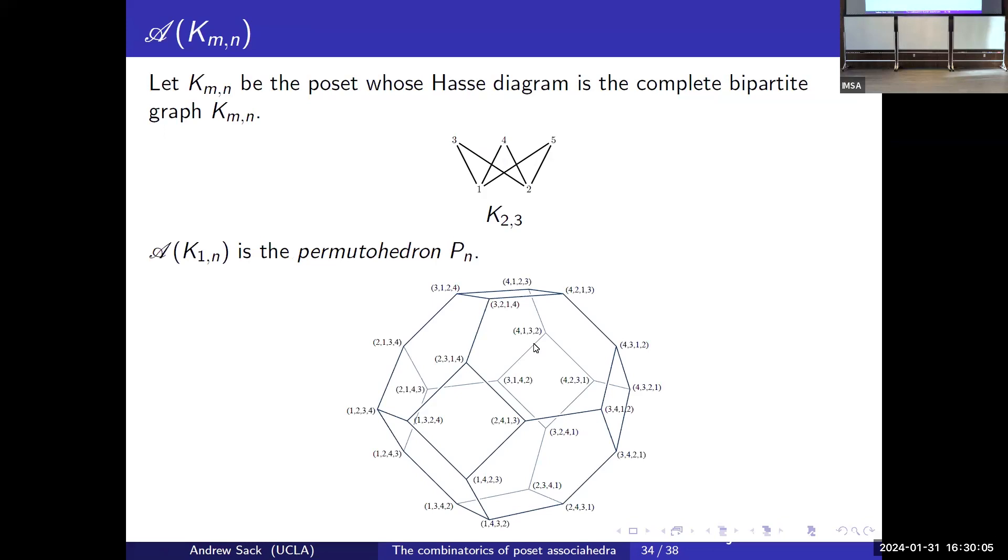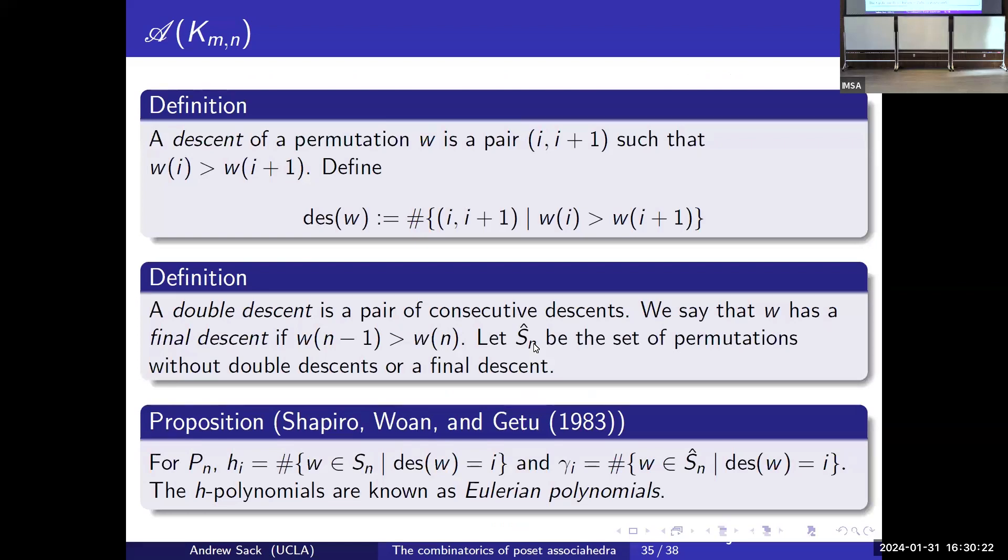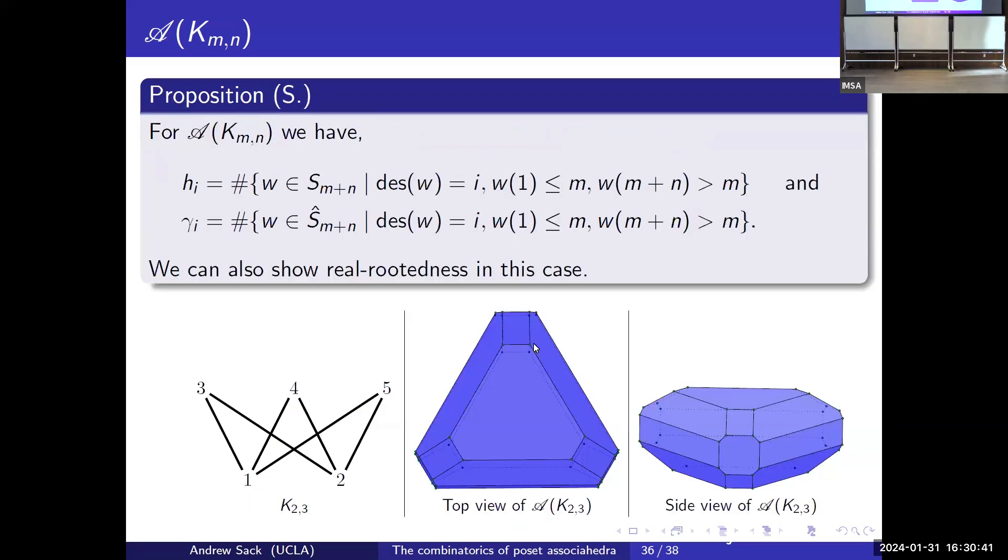This is going to be real-rooted, and this implies then gamma positivity. In this case we know, and what makes this case interesting is that this is a class of non-flag poset associahedra that are gamma positive. We can also talk about the complete bipartite graph. When we have the complete bipartite graph K_{1,n}, this is the claw poset, we get the Comb associahedron. The Comb associahedron has a famous formula for its H-vector and gamma vector where the H-vector is the number of permutations without two descents in a row.